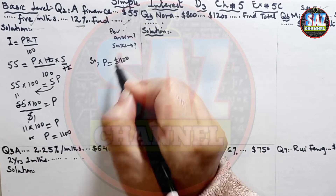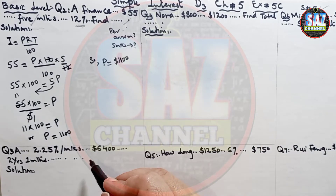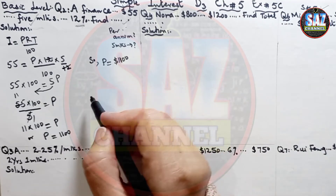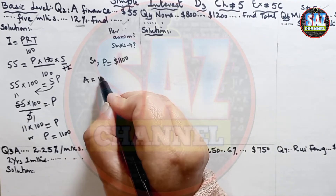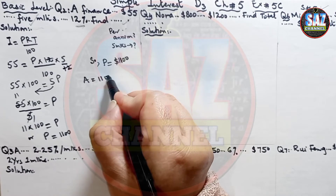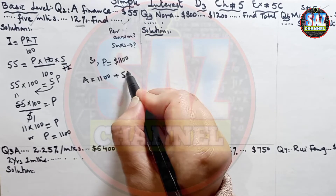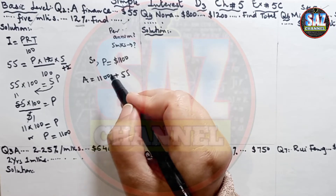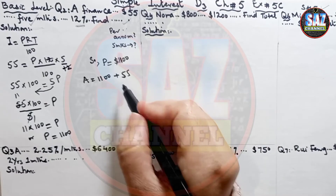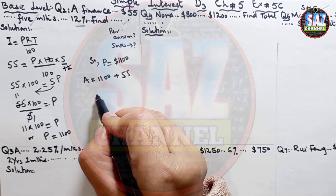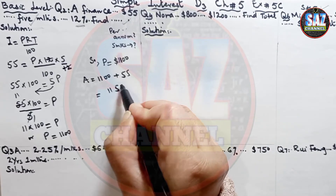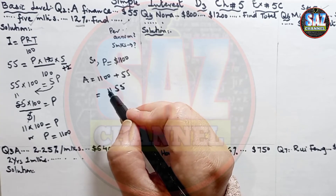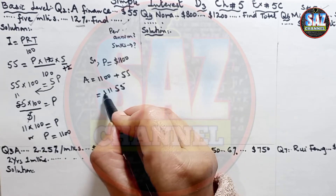We have to find the sum of money which is borrowed for 5 months. So the total amount will be equal to 1100 plus 55, which gives $1,155 — the amount which the finance company is giving as the loan.